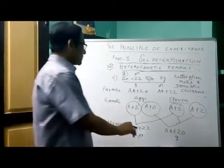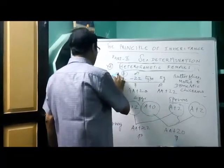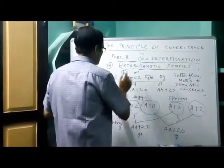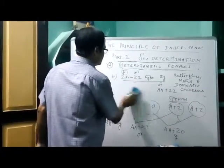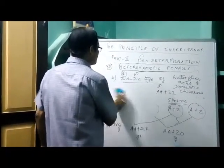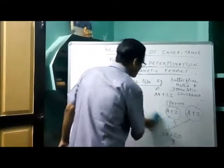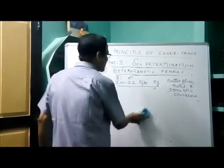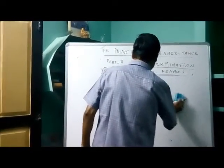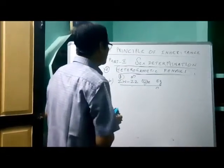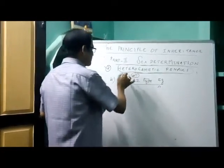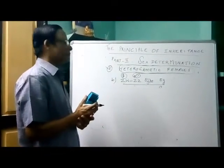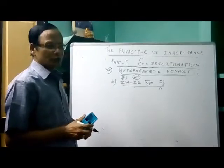Let us take the second type of sex determination. This is seen in the case of fishes, reptiles, and also birds, along with the gypsy moth. This is the ZW/ZZ type.